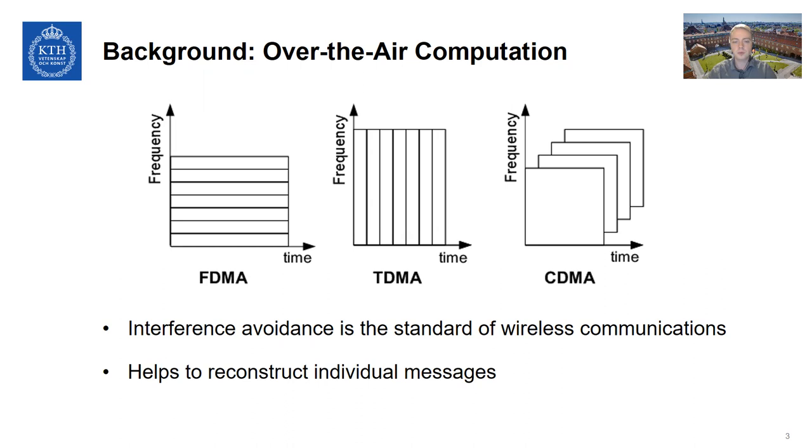And the advantage of using such a scheme is that it helps us to reconstruct individual messages. So if you have interference avoidance, then the receiver can see the message of an individual device without much interference from the other devices. However, the cost is that this is very expensive in terms of communication resources. If you compare this to a single device having full access to all time and spectrum, they could communicate much more efficiently.